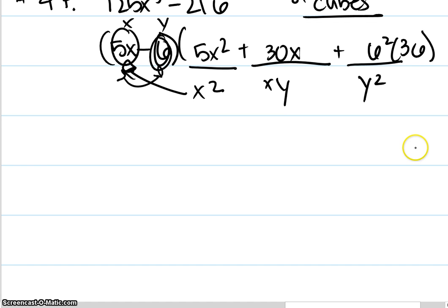To clean it up again, the final answer would be 5x minus 6 times 5x squared plus 30x plus 36.